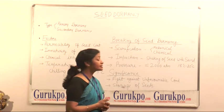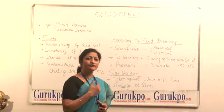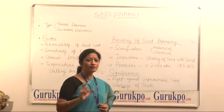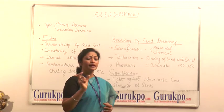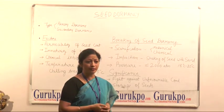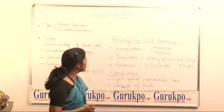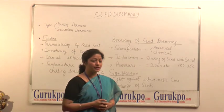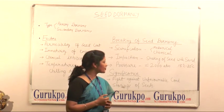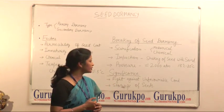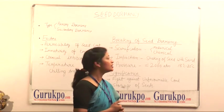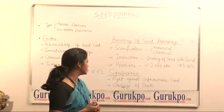A second important method is impaction, by which we can break seed dormancy. Impaction means shaking the seed with sand so that its suberized plug breaks and it can easily germinate. Another method involves applying pressure of approximately 2000 atm at 18 to 20 degrees Celsius temperature for a short duration to break seed dormancy.